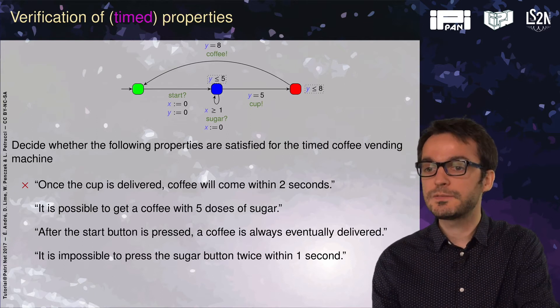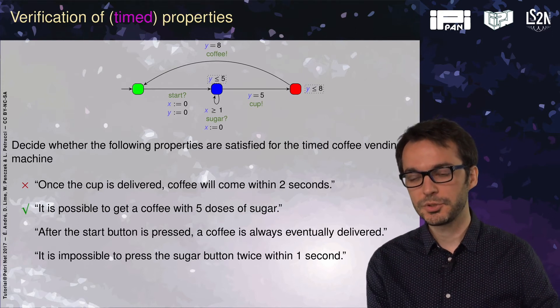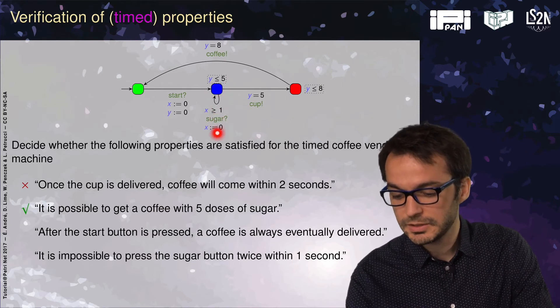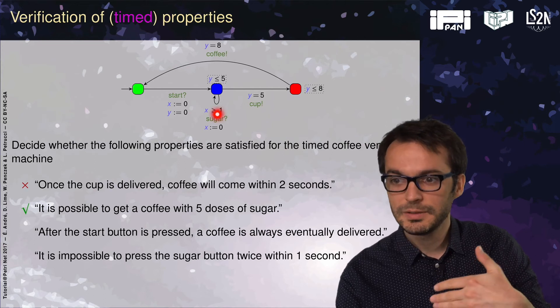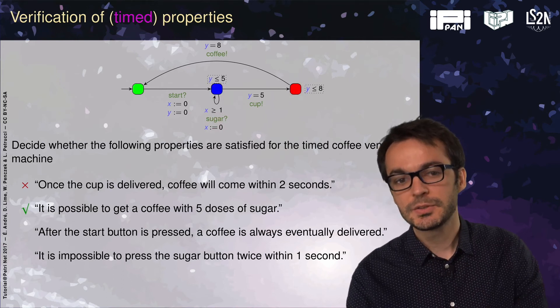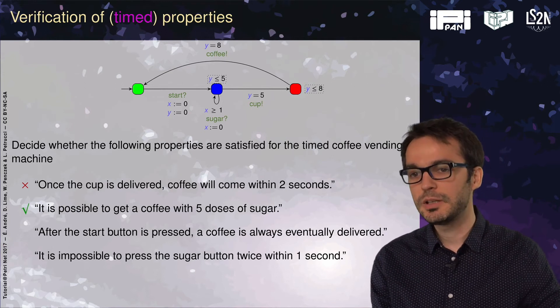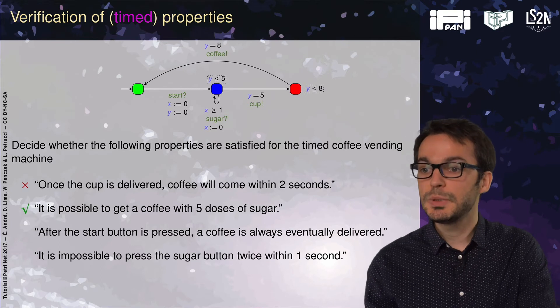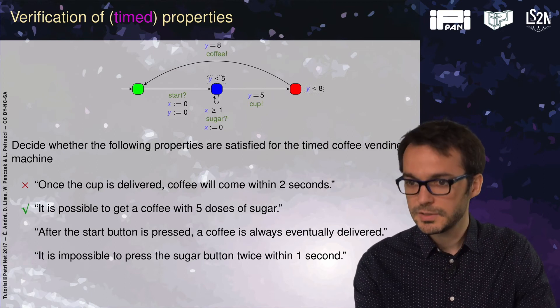Is it possible to get a coffee with five doses of sugar? Yes, if you press exactly five times the sugar button right on time, meaning as soon as x equals one you reset it. When y equals two, three, four, and then when y equals five you can press the sugar button and immediately go there. It's a very non-robust behavior because if you wait infinitesimally more than you should before pressing the sugar button, you will miss the last sugar. This is non-robust but theoretically with this model it is possible.